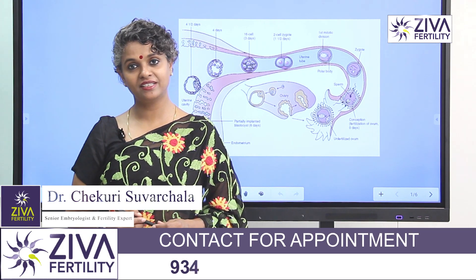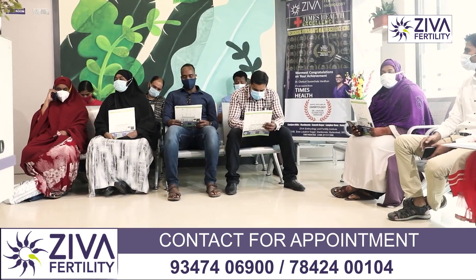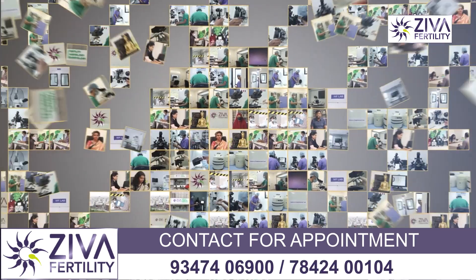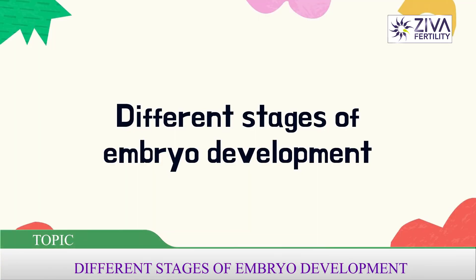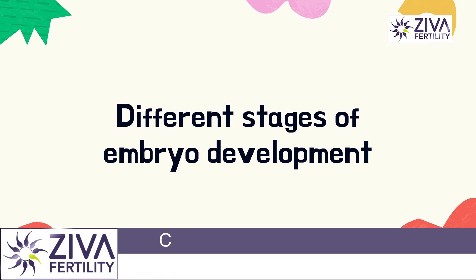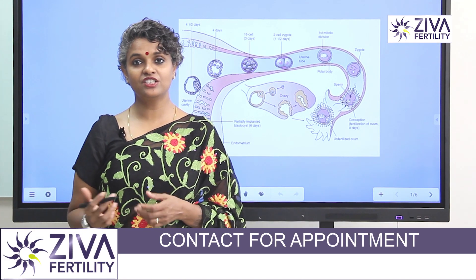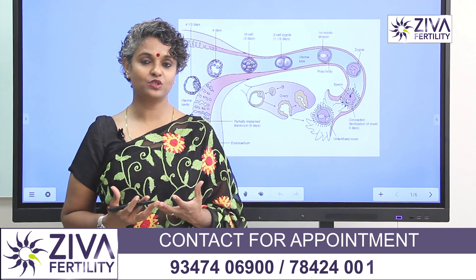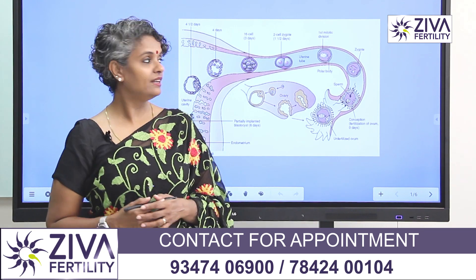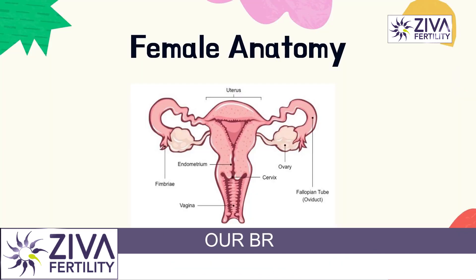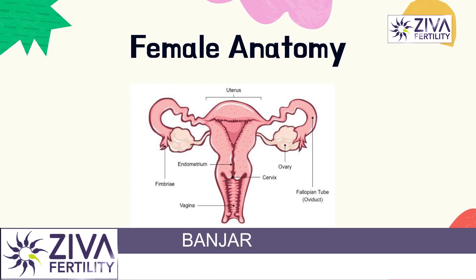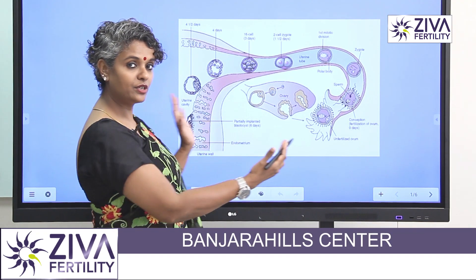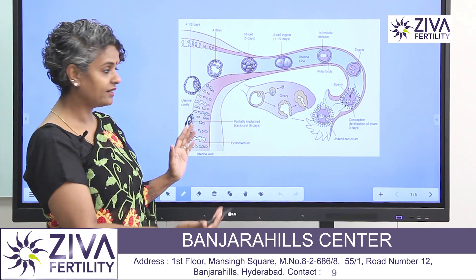I'm Dr. Suvachla, Scientific Director with Zeeva Fertility Centers. Let's try to understand the different stages of an egg's development, how it fertilizes and at what stage it comes into the uterus to become a baby. Let's try to see how the anatomy is. On either side of the uterus are two tubes which are connected to two ovaries. I'm trying to show you one half of the entire anatomy.